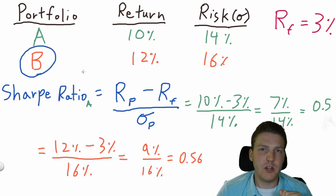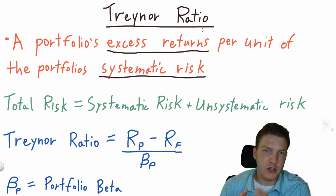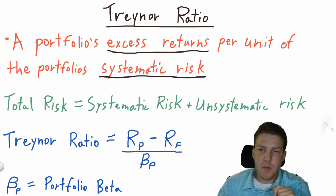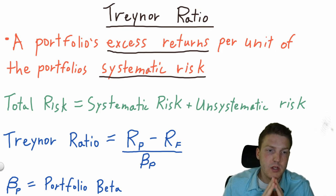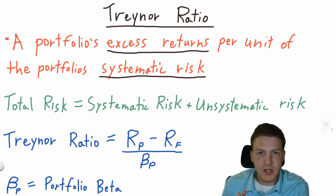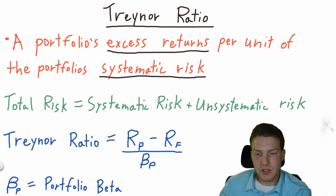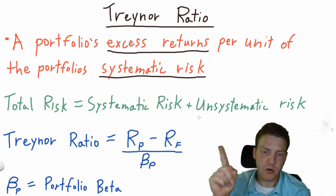The Treynor ratio is very similar to the Sharpe ratio but with one minor change. The Treynor ratio is a portfolio's excess returns per unit of the portfolio's systematic risk. With the Sharpe ratio it was per unit of total risk; with the Treynor measure it's just the systematic risk. Total risk equals systematic risk plus unsystematic risk.